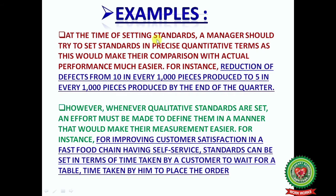At the time of setting the standards, a manager should try to set standards in precise quantitative terms, as this would make their comparison with actual performance much easier. For example, reduction of defects from 10 in every 1000 pieces produced to 5 in every 1000 pieces produced by the end of the quarter. Here the manager first detects the errors — 10 units in a lot of 1000 pieces — and the next target is to reduce that defect from 10 units to 5 units. That is your quantitative standard.